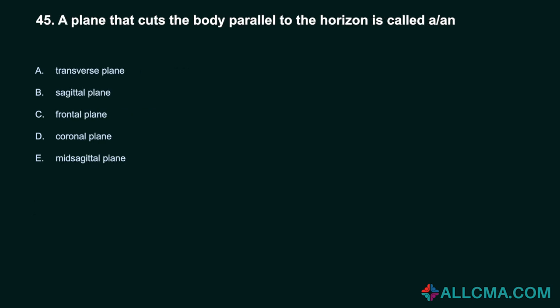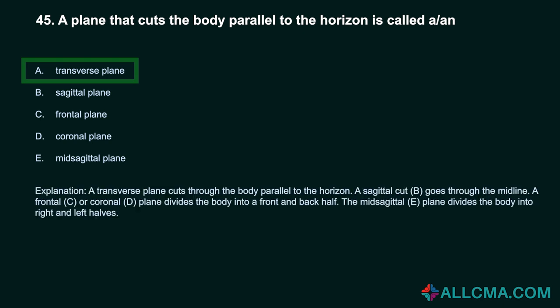Question 45: A plane that cuts the body parallel to the horizon is called a: a) transverse plane, b) sagittal plane, c) frontal plane, d) coronal plane, e) mid-sagittal plane. Correct answer: A, transverse plane. A transverse plane cuts through the body parallel to the horizon. A sagittal cut goes through the midline. A frontal or coronal plane divides the body into front and back halves. The mid-sagittal plane divides the body into right and left halves.